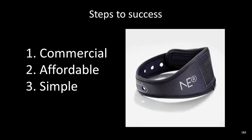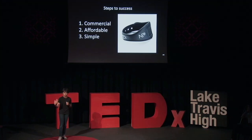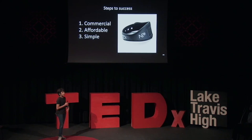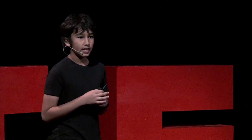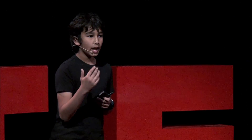Steps to success. A plan for neuroplasticity to become commercial would have to be affordable and simple. What you see here is an example of an external neuroplasticity device called a neuroband. This neuroband is really cool because it takes external inputs and puts them into your brain. And because of neuroplasticity, your brain deals with them and gives a reasonable output. Pretty amazing.